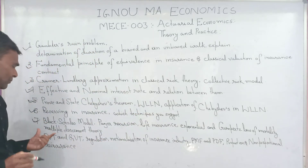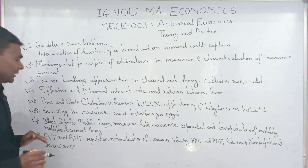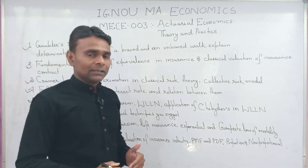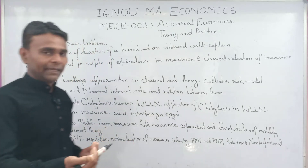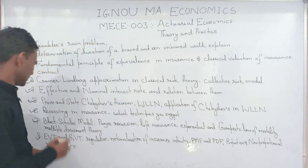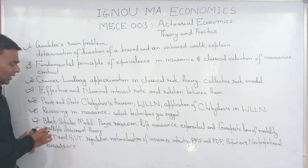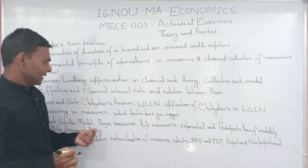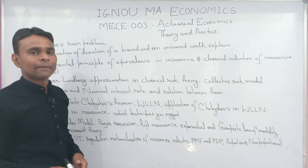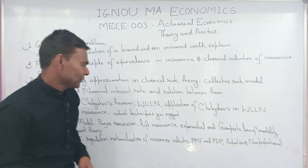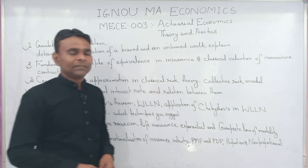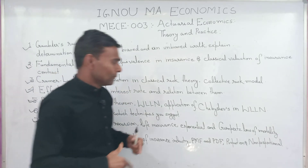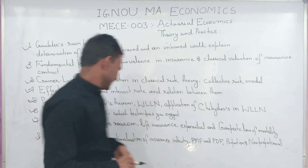There are also smaller topics which might be asked, carrying 12 marks, such as: Black-Scholes-Merton model, Panjer Recursion, the concept of life insurance, and the differences between the exponential and Gompertz's law of mortality.